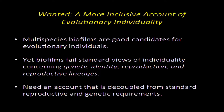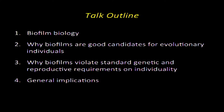Or we might mean an evolutionary individual — those are the things we think about as targets of selection, the units of selection. I'm going to focus on evolutionary individuals. My target today is we want a more exclusive, inclusive account of evolutionary individuality. I'm going to use the case of biofilms. I'll argue that multi-species biofilms are good candidates for evolutionary individuals, then turn to how biofilms fail a bunch of standard views of individuality regarding genetic identity, reproduction, and reproductive lineages, and draw the implication that we need an account decoupled from standard reproductive and genetic requirements.